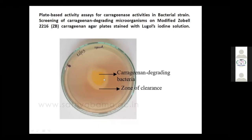The zone of clearance shows that this bacteria is degrading the carrageenan. This appears as a zone formation — the carrageenan-degrading bacteria produces a carrageenan enzyme which eats the carrageenan in the media.